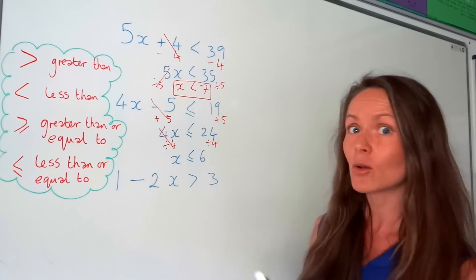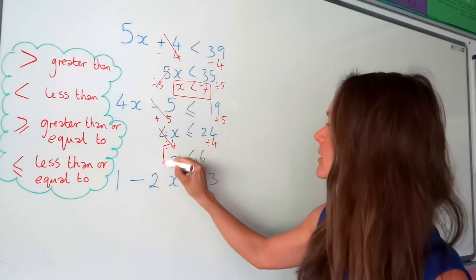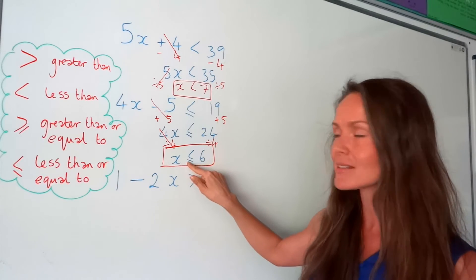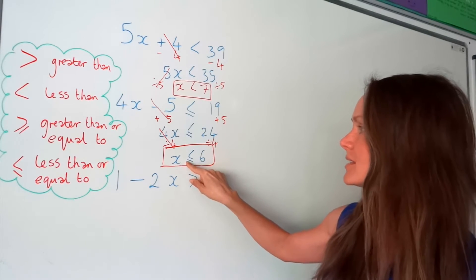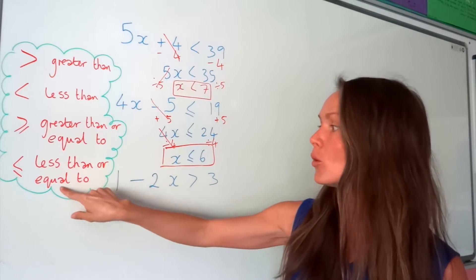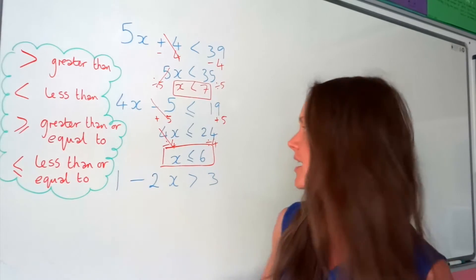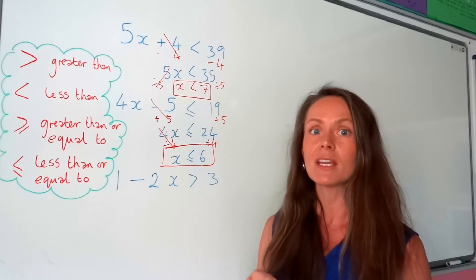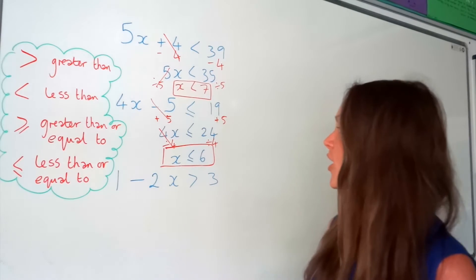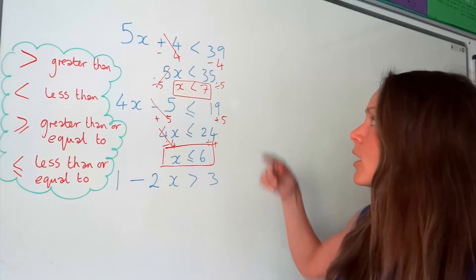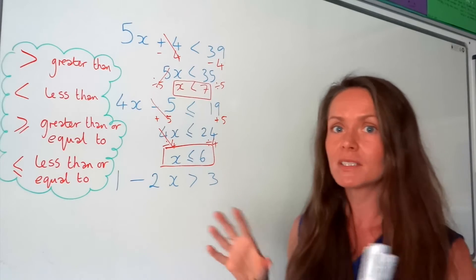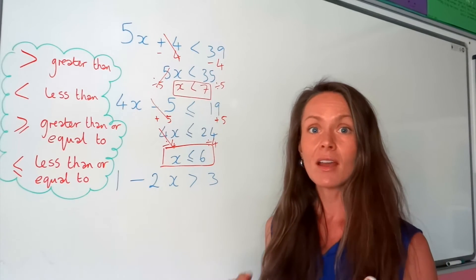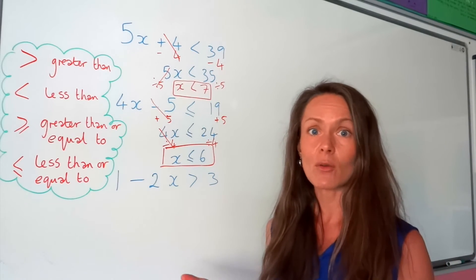The last step is to divide by 4 on both sides, because that's the opposite of multiplying by 4. 4 divided by 4 is 1, leaving 1x, and 24 divided by 4 is 6. So we've solved this inequality. This time x is less than or equal to 6, because this sign means less than or equal to. So x could be 6, 5, 4, 3, 2, 1, etc. Notice how the sign didn't flip — it's just like solving linear equations.